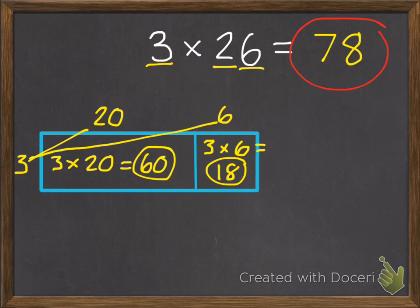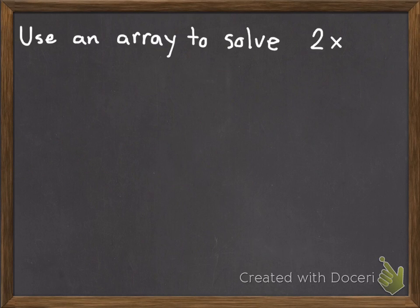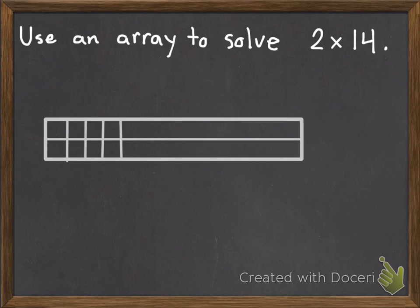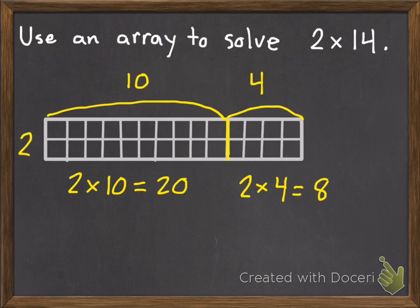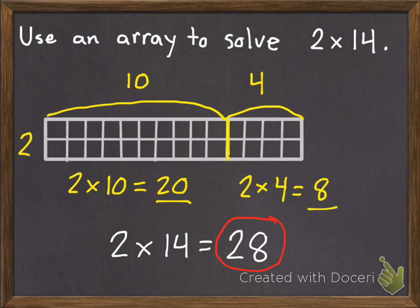Now it's time for you to give it a try. Use an array to solve 2 times 14. Go ahead and pause. An array should look like this: 2 by 14, with your 14 broken apart into 10 and 4. So the first part is going to be 2 times 10 equals 20. The second part is going to be 2 times 4 equals 8. Add the 20 and 8 together and you get 28.